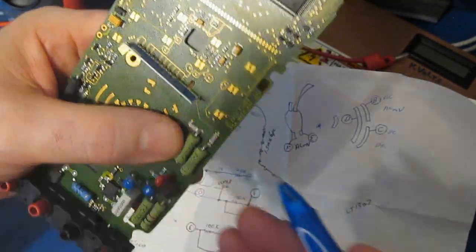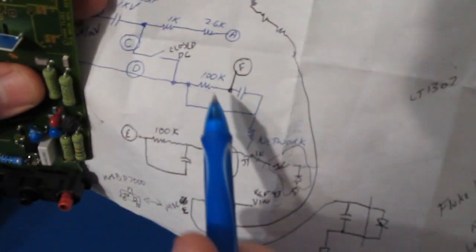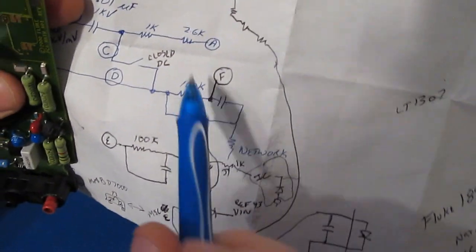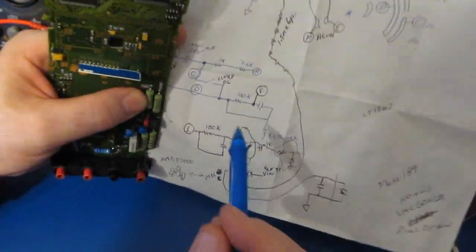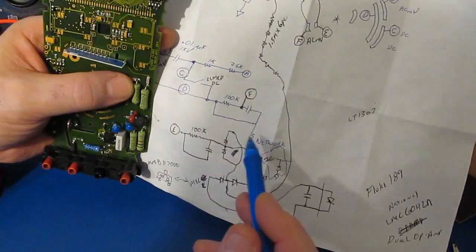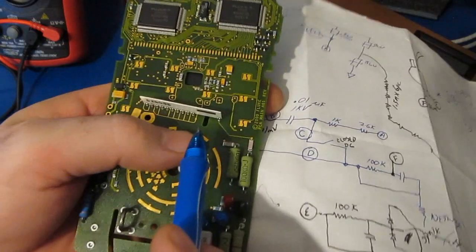That's what we've drawn here, you can see how it kind of loops back around again. That's the problem with drawing a schematic as you're tracing out the meter—it's tough to make rhyme or reason of it. Anyway, the common side of this goes to our resistor network, which is this guy right here.